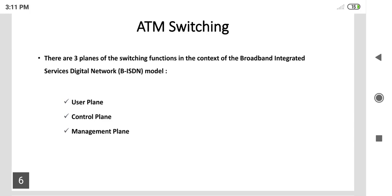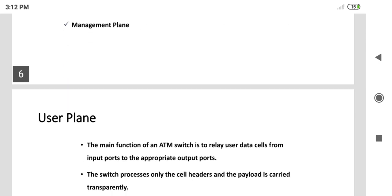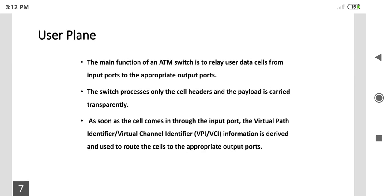Good morning friends. In today's session we are discussing the interrelated components of ATM switching. There are three planes of the switching function in the context of the Broadband Integrated Service Digital Network, which is called the BISDN model. These three planes are the user plane, control plane, and management plane. Let's discuss them one by one.